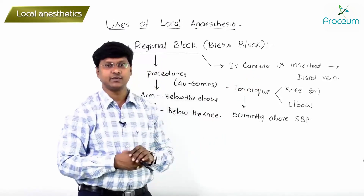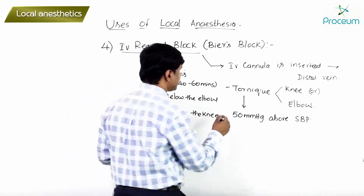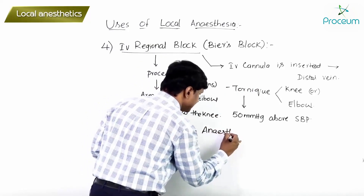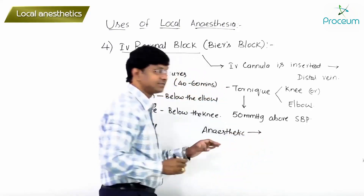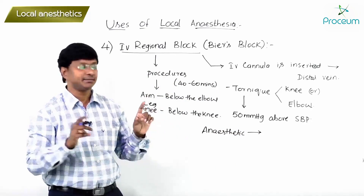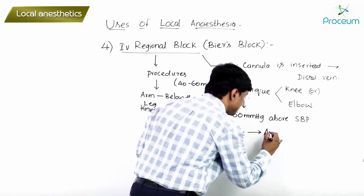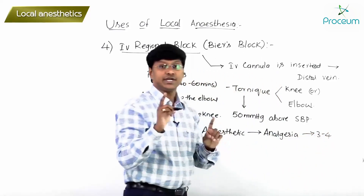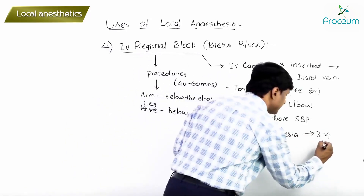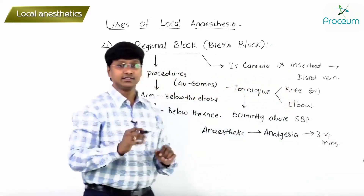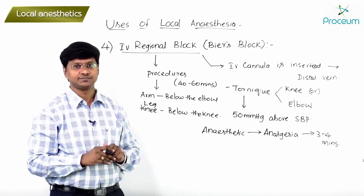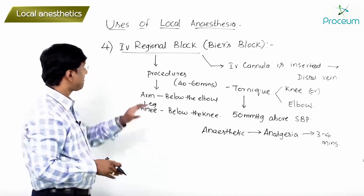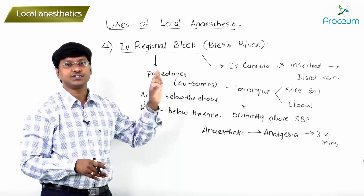The tourniquet pressure should be applied 50 millimeters of mercury above the patient's systolic blood pressure. After inserting the cannula into the distal vein, the anesthetic drug is injected. Analgesia will occur within three to four minutes, and the surgery can be commenced.